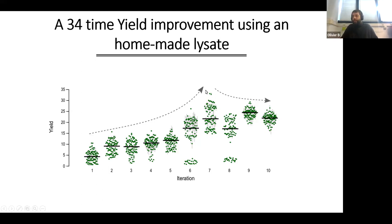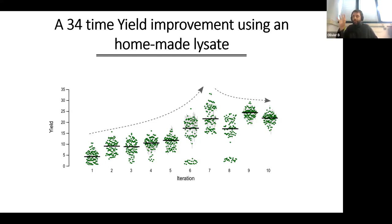After seven iterations, we managed to increase the yield around 30-fold. We found a maximum that we were not able to surpass after those seven iterations. Some measurements showed very low yields — those were cases where we forced the model to explore unpredictable areas of the space to avoid being stuck in a local optimum. We continued a few more iterations just to be sure, but never managed to exceed the maximum we had reached after seven iterations.